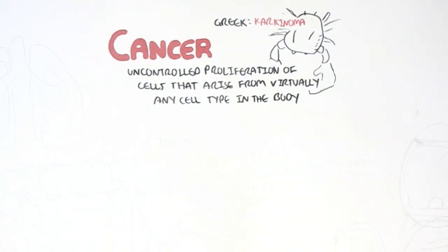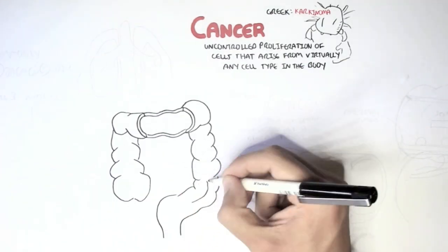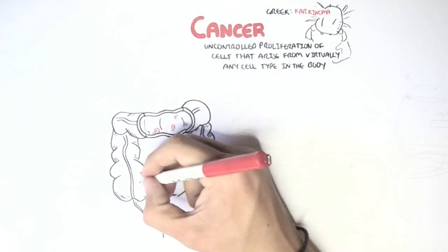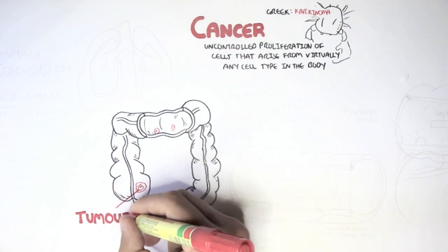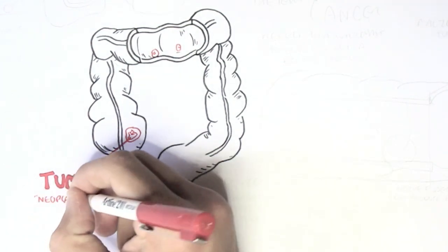Let us look at an example of cancer that may occur in the colon or in the large intestines. Here I am drawing the large intestines, also referred to as the colon. These red mushy looking things represent a tumor. Tumor refers to some form of new growth, but when dealing with cancer-like tumors, it is better to refer to tumors as neoplasia, which means new growth.